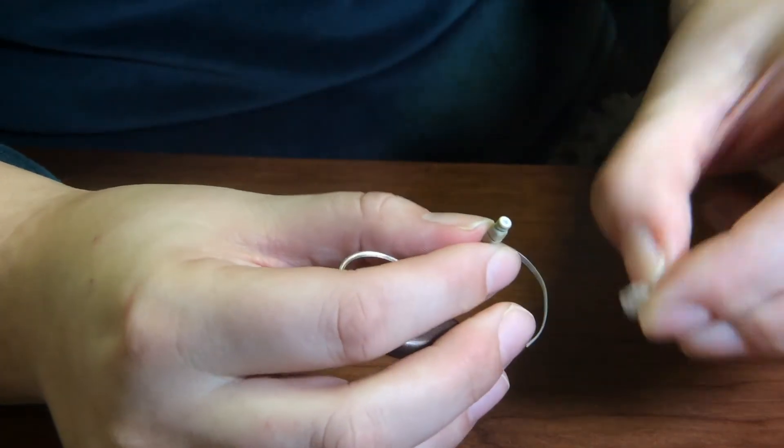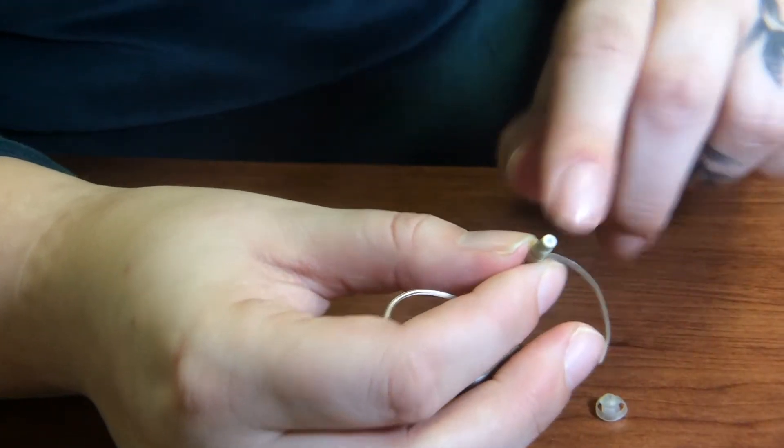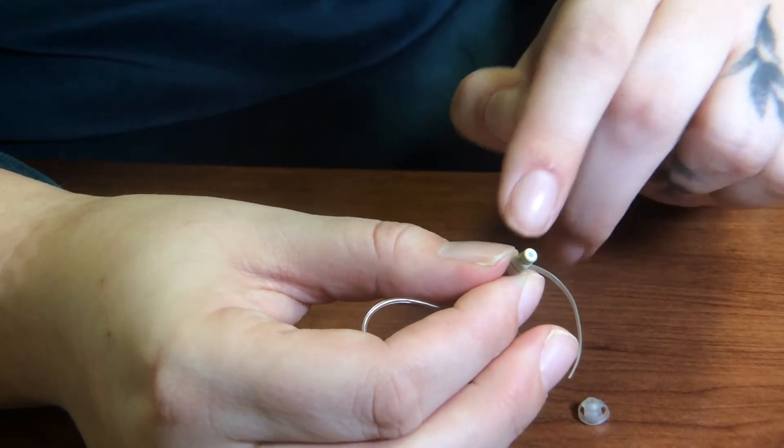And then you want to take the dome off. Most of them are grip tip style and they just connect towards the bottom of the hearing aid.